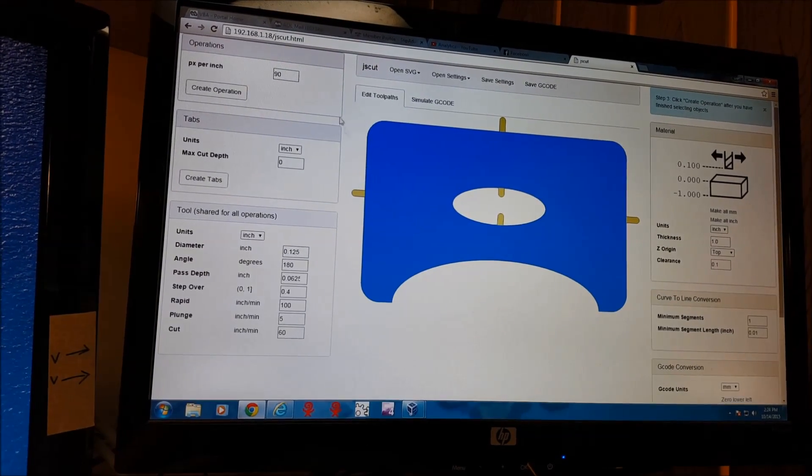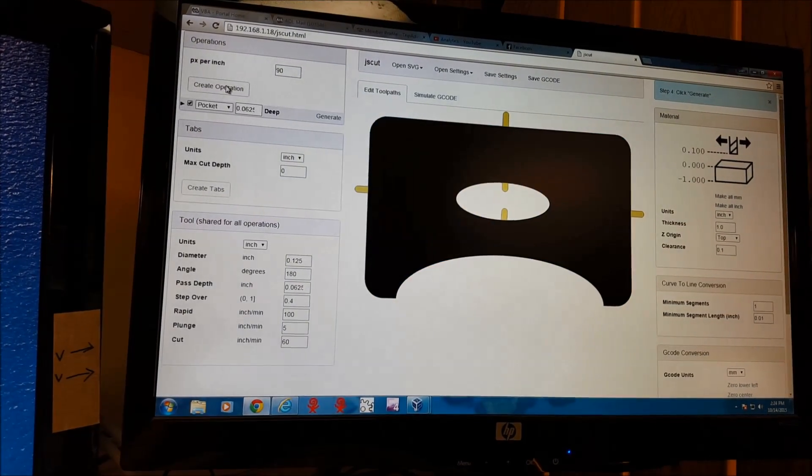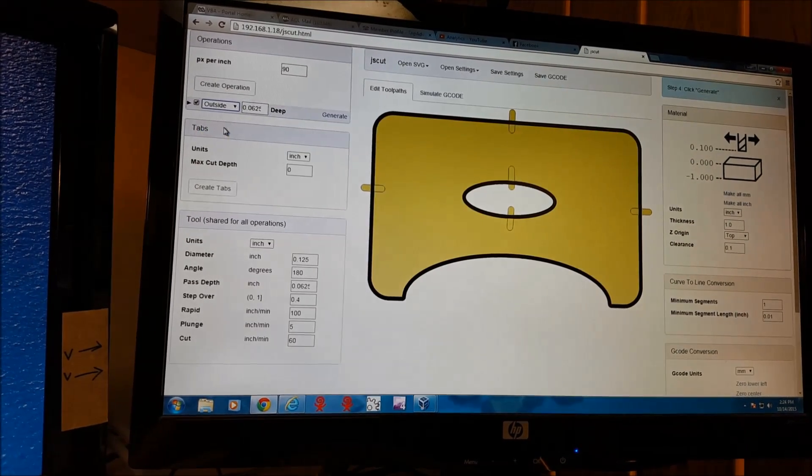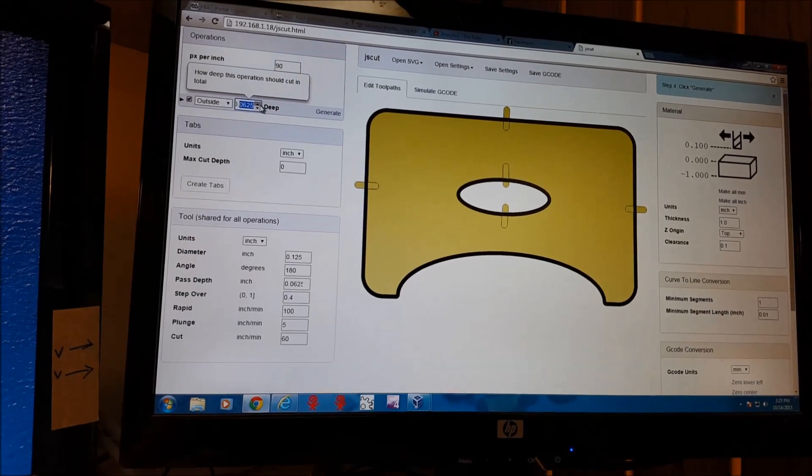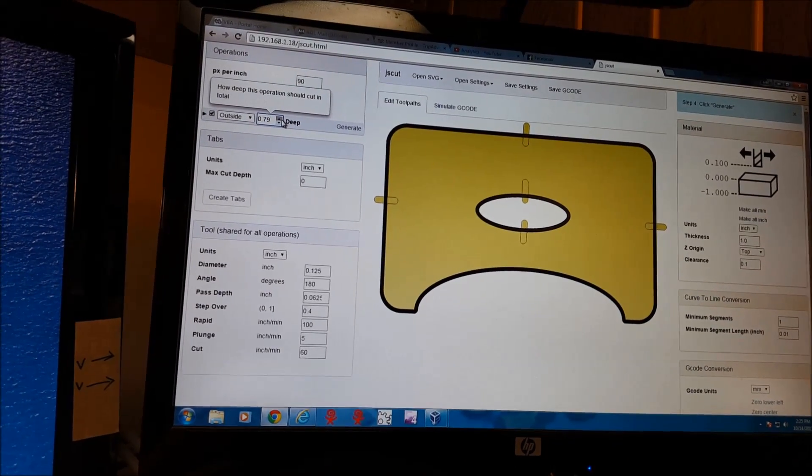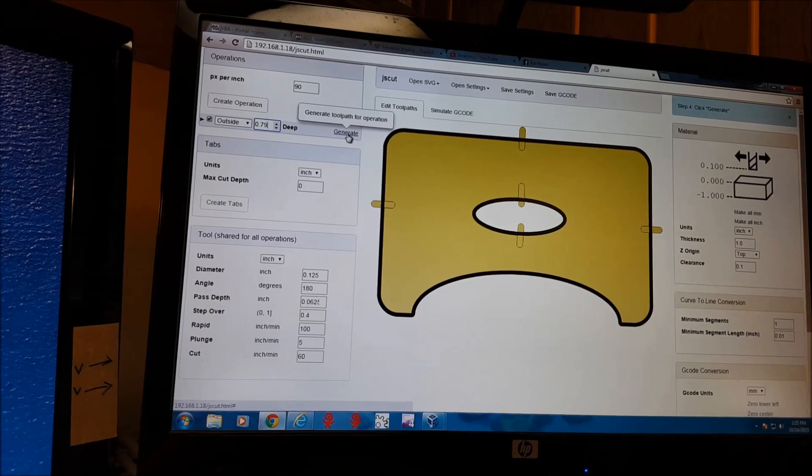So then we click on this. We go to create operation. We're going to do an outside cut. And since our pine is about 3 quarters of an inch, we'll make this about 0.79, 0.78, 0.79.